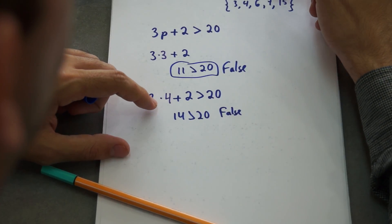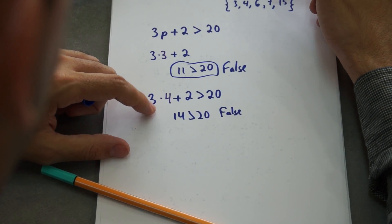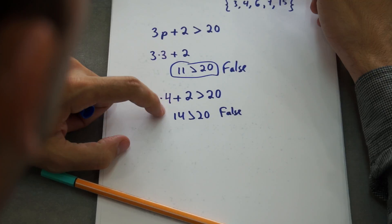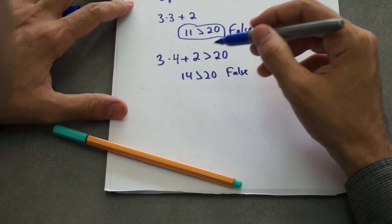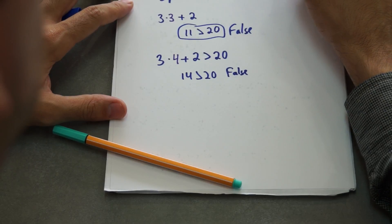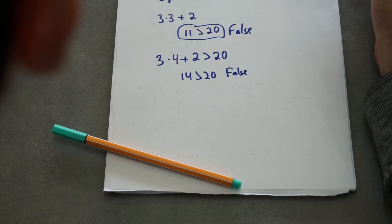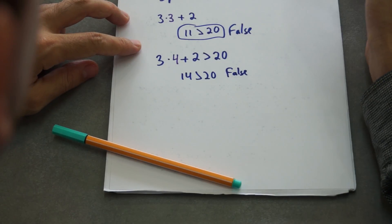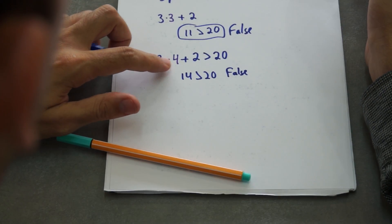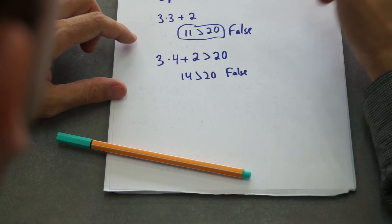And from 7 on, that will be true. Because 7 times 3 is 21 plus 2 is 23, and 23 is greater than 20. So if 23 is greater than 20, 7 is part of the true value of the set, and 15 is too. Because 3 times 15 is 45 plus 2 is 47. 47 is greater than 20.